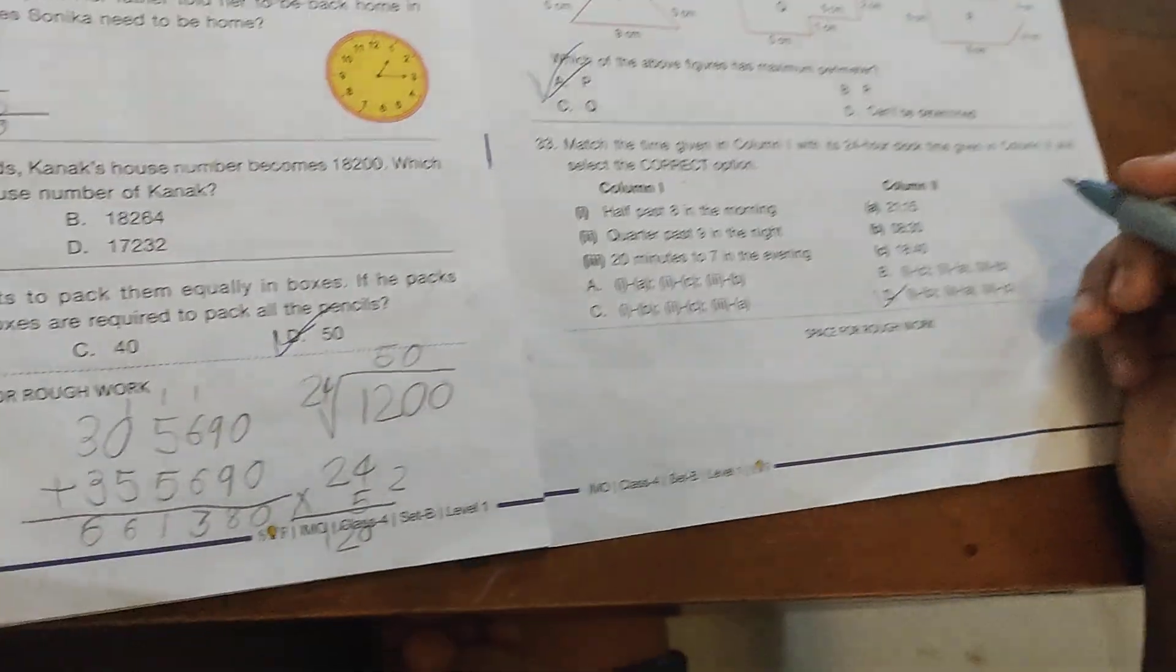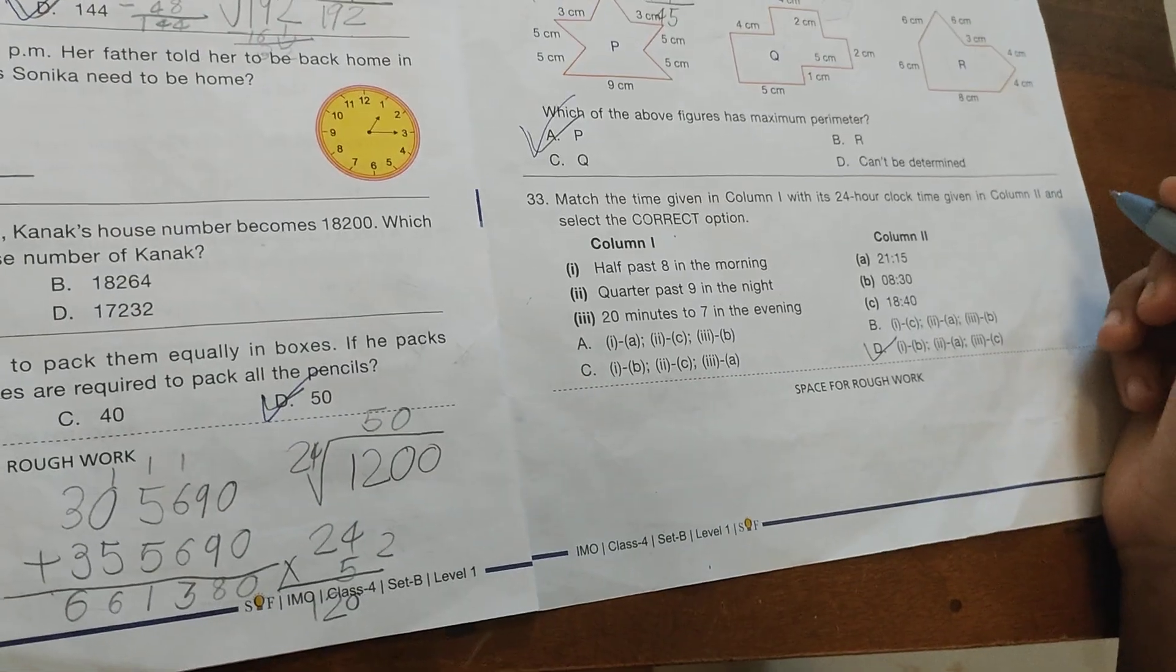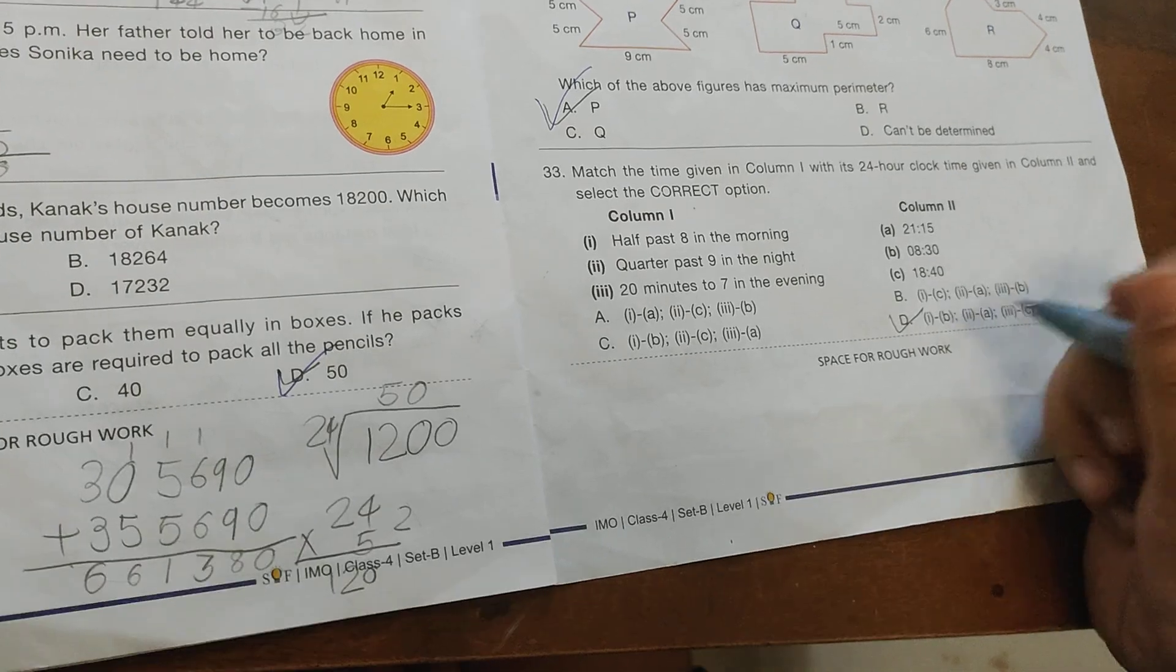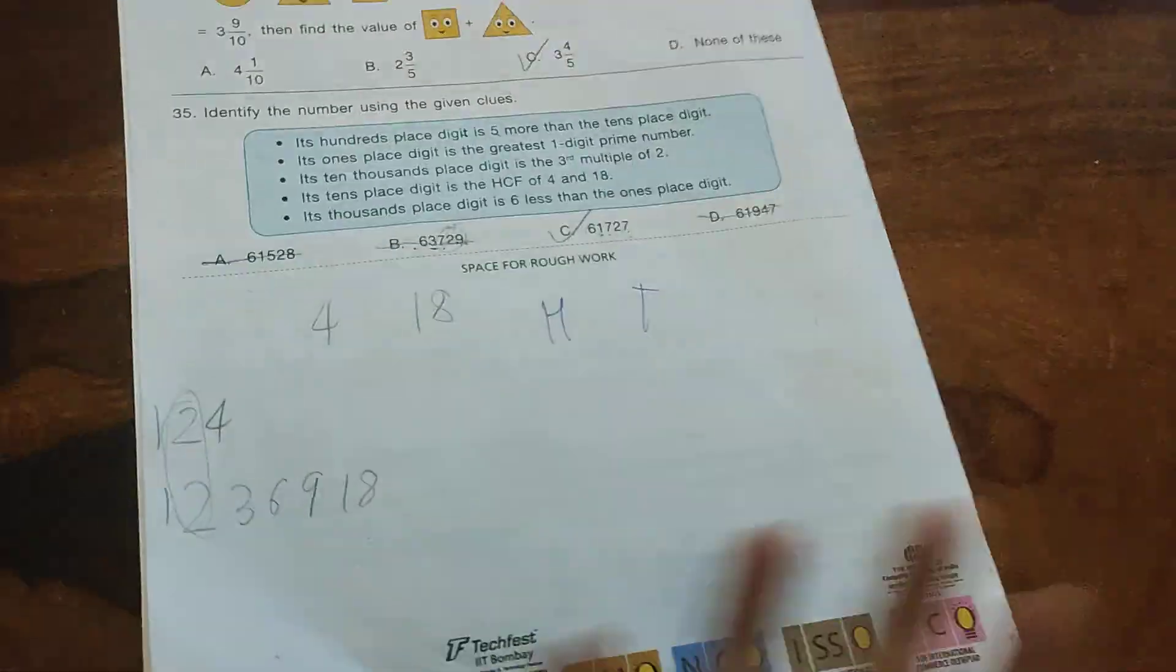Question 33: Match the times given in column 1 with the 24-hour clock times in column 2. Select the correct option. The answer is option B: 1-B, 2-A, and 3-C. Question 34: